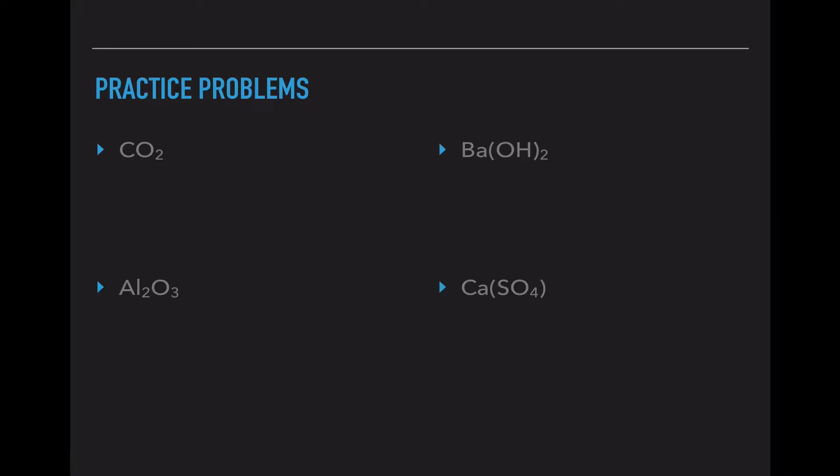Here are a couple practice problems. Carbon dioxide is CO2. C has a mass of 12 and there's one present. O has a mass of 16 and there are two present. So 12, 32, CO2 has a total mass of 44 atomic mass units.